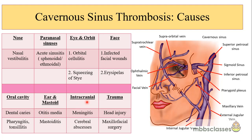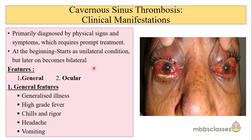Since there is intracranial communication with the cavernous sinus via the cerebral veins, meningitis and cerebral abscess can also lead to thrombosis. In very rare cases, head injury and maxillofacial surgeries can cause cavernous sinus thrombosis. The most common sources remain nasal causes and eye causes. This disease is primarily diagnosed clinically by physical signs and symptoms, and if diagnosed at a proper time with prompt treatment started, the patient can be saved and mortality rate is less.